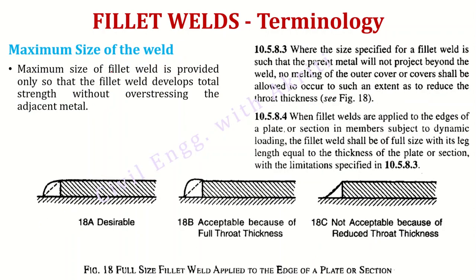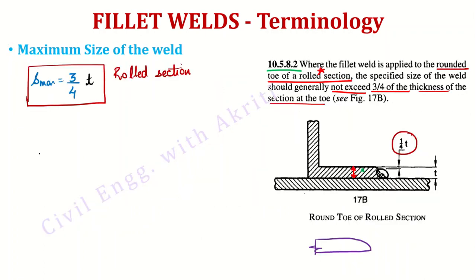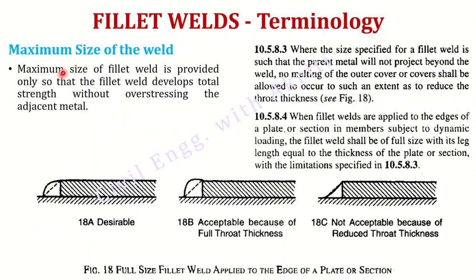So we have seen minimum size and maximum size of the weld. We select the design size within this range. Maximum size of fillet weld is provided so that the fillet weld develops total strength without overstressing the adjacent material. If we exceed the maximum size, the adjacent metal gets overstressed. So we must keep the weld within the specified maximum limit.